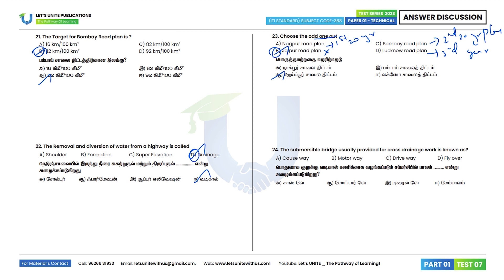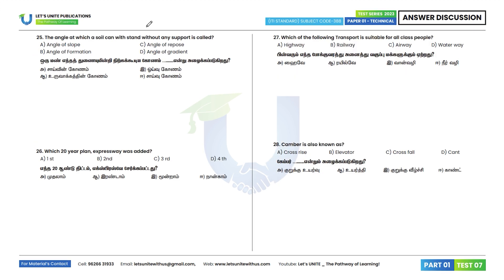24th question: The submersible bridge usually provided for cross drainage work is known as a causewy. Option E. 25th question: The angle at which soil can withstand without any support is the angle of repose. This is an important question.